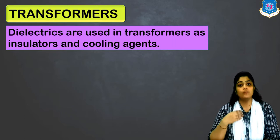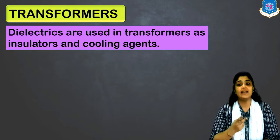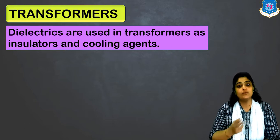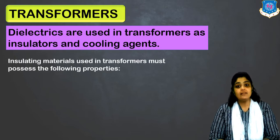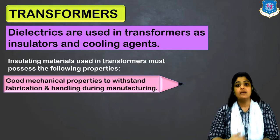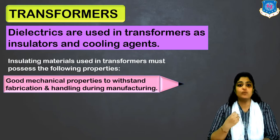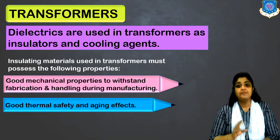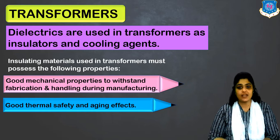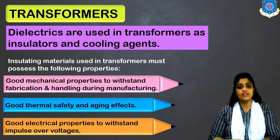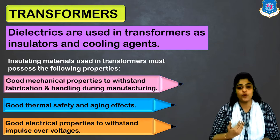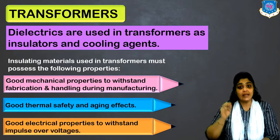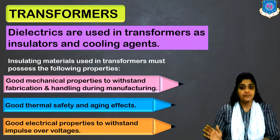Now let us move to the second application of dielectrics: transformers. In a transformer, the use of dielectric is to provide insulation and to act as a cooling agent. So transformers use dielectrics both as insulators and cooling agents. Materials used in transformers must have good mechanical properties to withstand handling during manufacturing processes, good thermal stability and aging resistance, and good electrical properties to withstand impulse overvoltages.